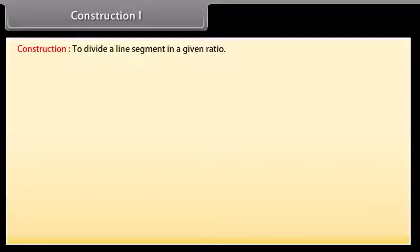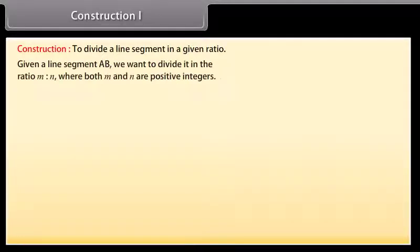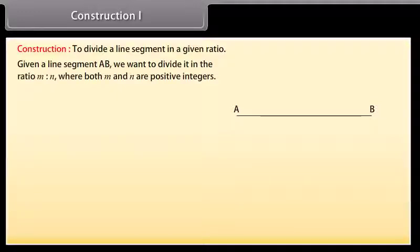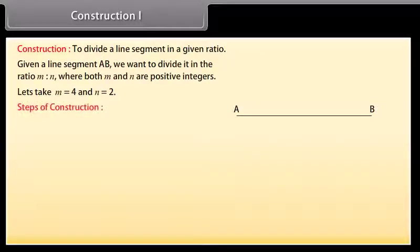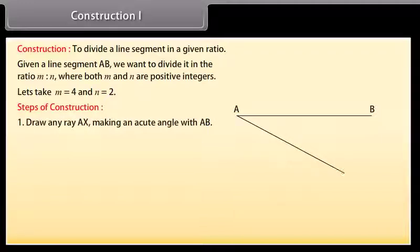To divide a line segment in a given ratio: given a line segment AB, we want to divide it in the ratio M is to N, where both M and N are positive integers. Let's take M as 4 and N as 2. Steps of construction: draw any ray AX making an acute angle with AB.